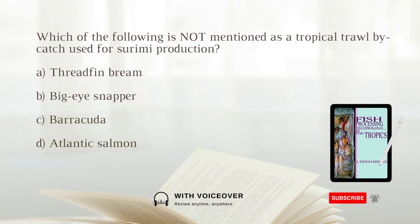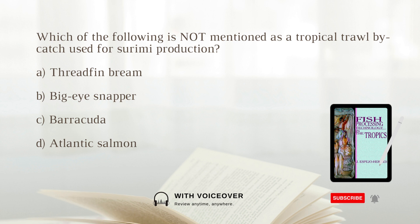Which of the following is not mentioned as a tropical trawl bycatch used for surimi production? A. Threadfin bream. B. Big eye snapper. C. Barracuda. D. Atlantic salmon. Answer: D. Atlantic salmon.